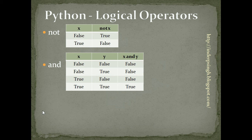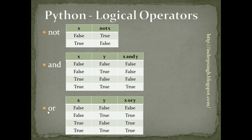The third logical operator is OR. The OR operator needs two operands, just like the AND operator. If both the values are false, then OR results in false. Otherwise, it results in true.